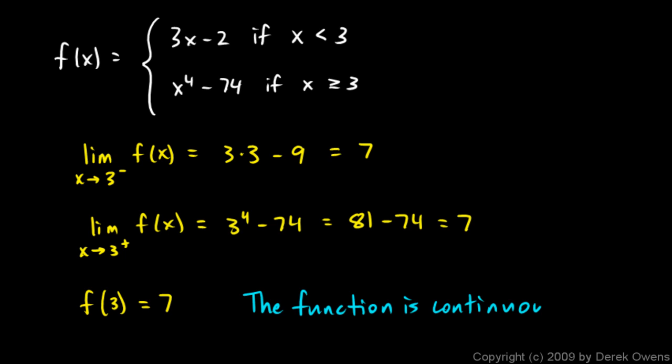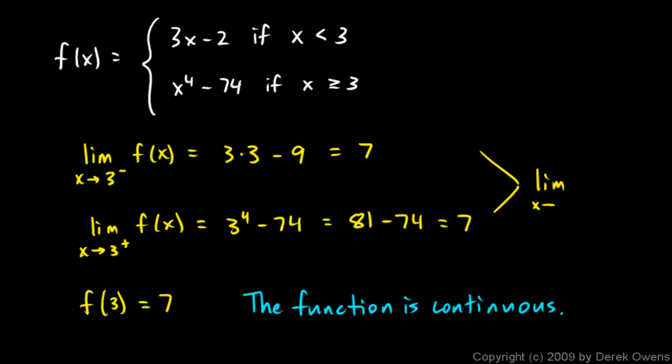On a test, exam, or especially the AP exam, you might be told to justify your answer or give a reason for your answer. You would need to include all three calculations: the limit as x approaches 3 from the left, from the right, and the value of the function. Show that the limit as x approaches 3 exists and equals 7, and that the limit equals the value of the function at 3.